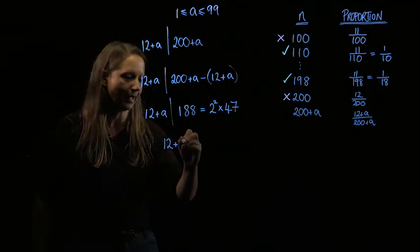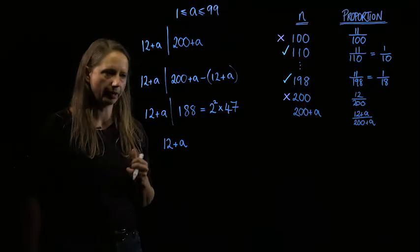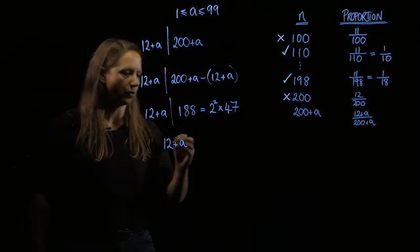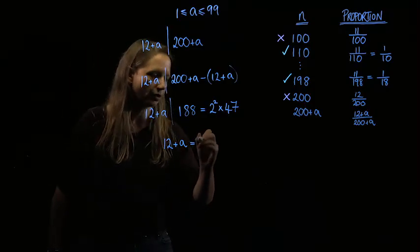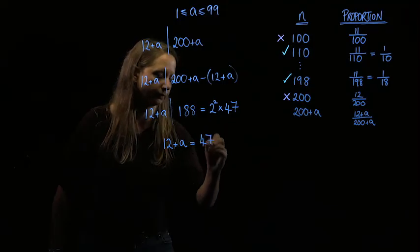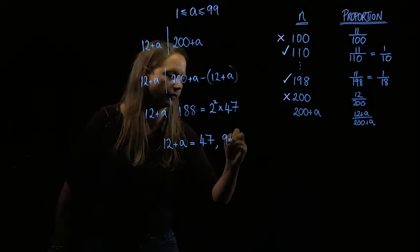So 12 plus a can't be equal to 1 or 2 or 4, but it could be equal to 47 or it could be equal to 94.